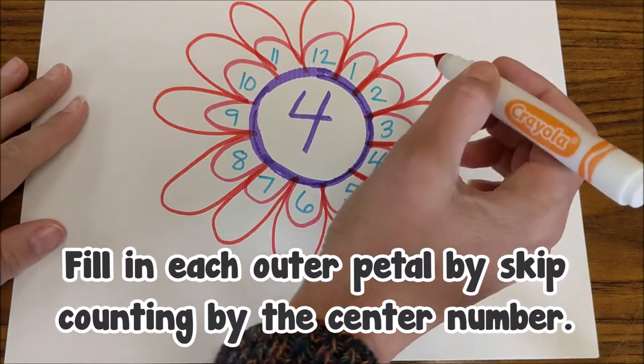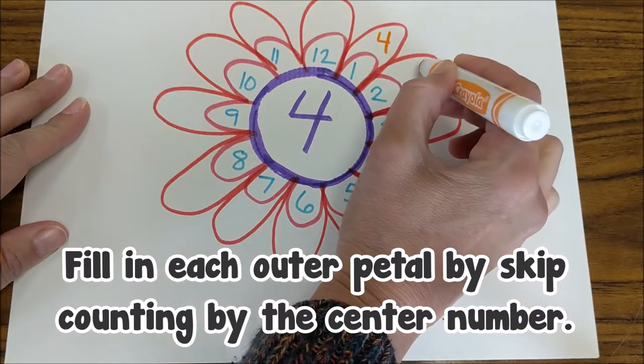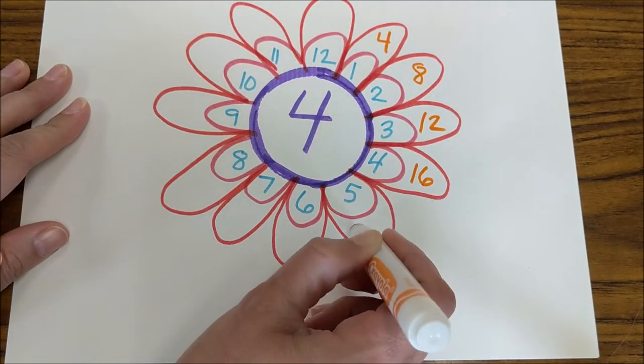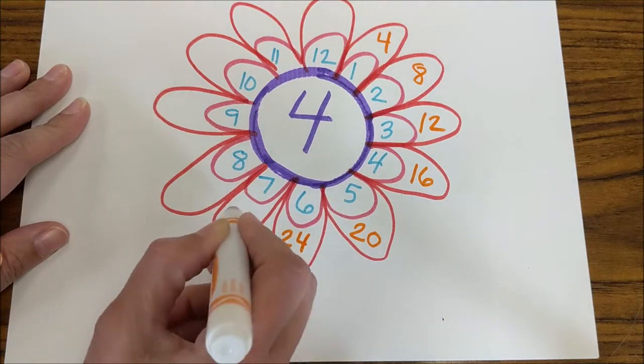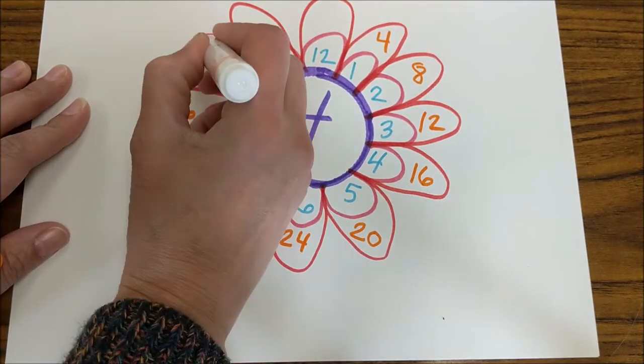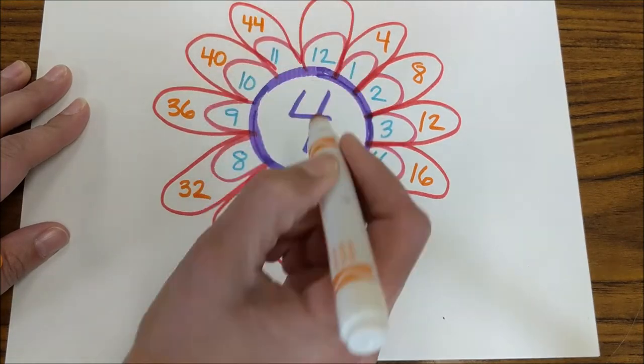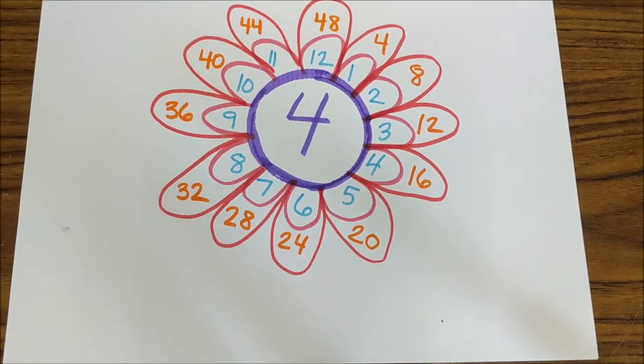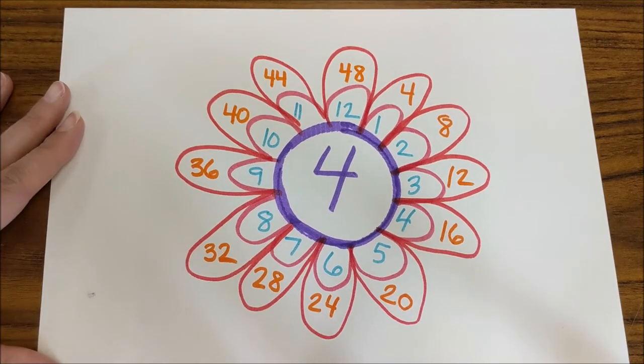Fill in each of the outer petals by skip counting by the center numbers. So here we're skip counting by fours: 4, 8, 12, 16, 20, 24, 28, 32, 36, 40, 44, and 48. Now we're done.